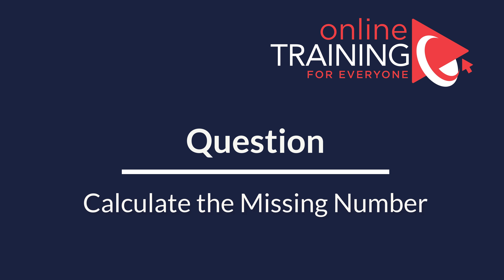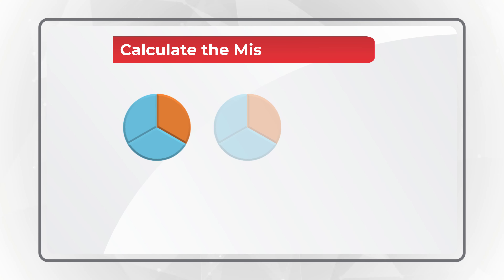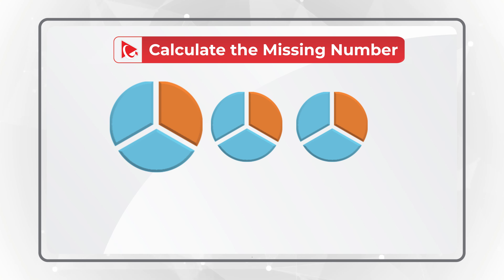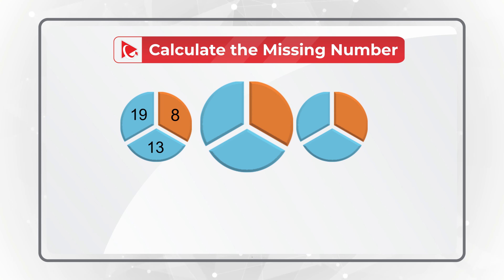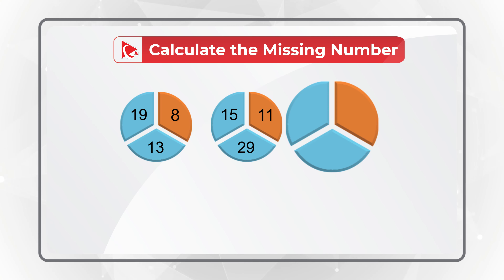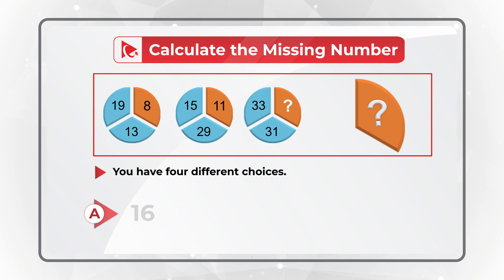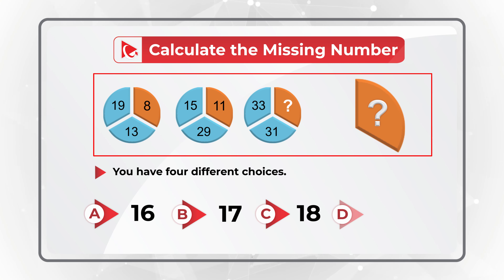Here is a puzzling question which has a very surprising solution. You're presented with three circles, each circle is broken into three equal parts. The first circle has numbers 8, 19, and 13. The second circle has numbers 11, 15, and 29. The third circle has numbers 33 and 31, and then one number is missing. You need to calculate the missing number out of four choices: choice A 16, choice B 17, choice C 18, and choice D 20.